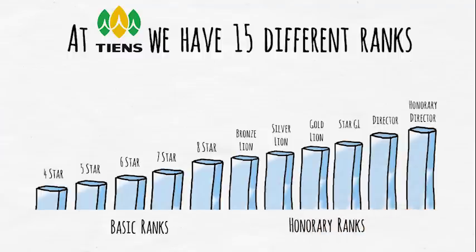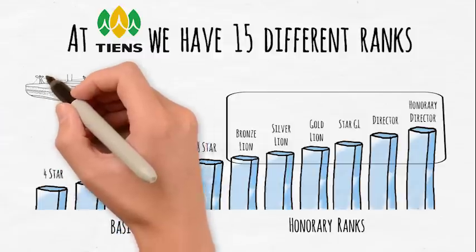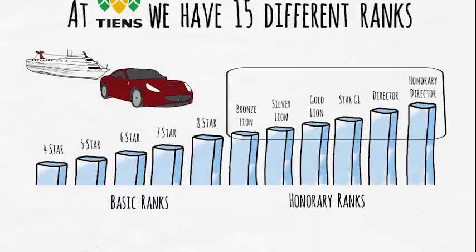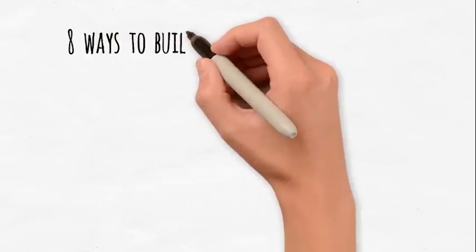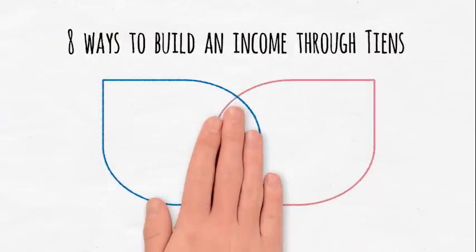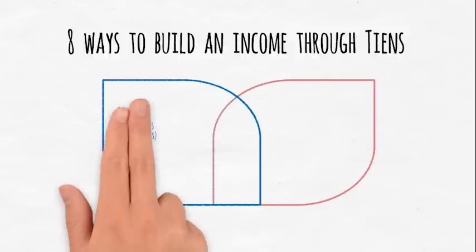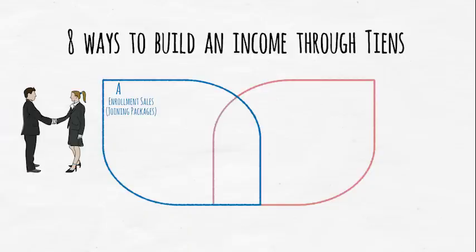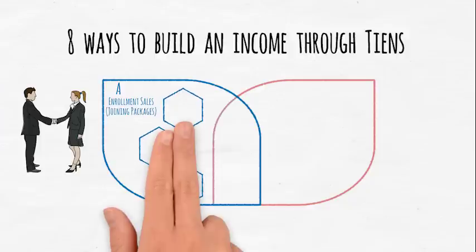The honorary ranks at the top, from Bronze Lion to Honorary Director, unlock the highest levels of reward and can be genuinely life-changing. There are also eight ways to build an income through Tienz. As you can see here, there are two complementary areas. The first we call enrollment sales, and this happens every time you or one of your team introduce someone new to your network.